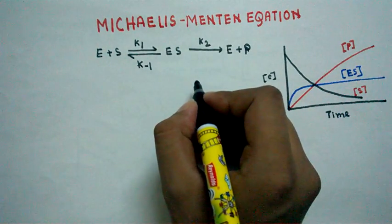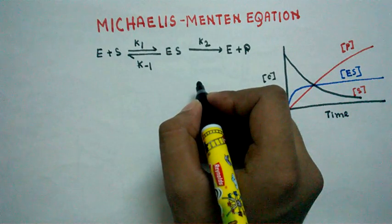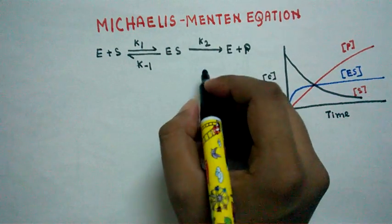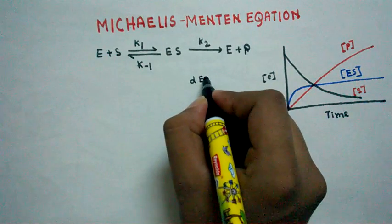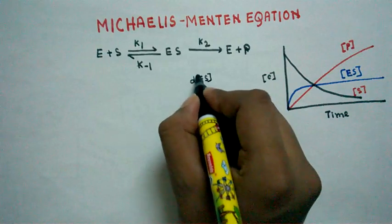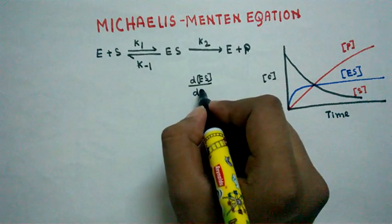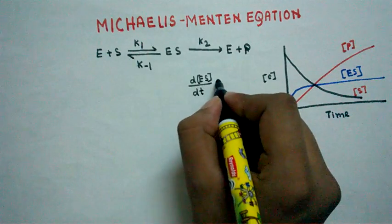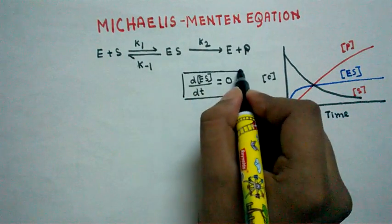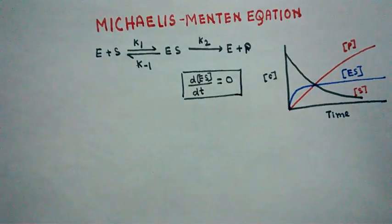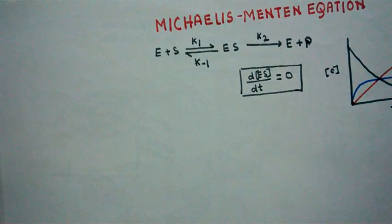From this observation, our assumption is that the rate of formation and rate of breakdown of the enzyme-substrate complex is almost constant. Since it is constant, the rate of change of the enzyme-substrate complex with respect to time — that is, d[ES]/dt — equals zero. This is our steady-state assumption.